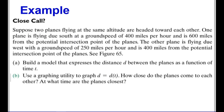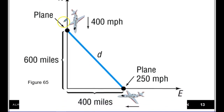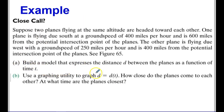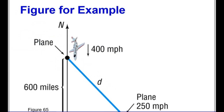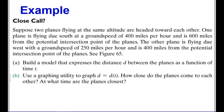Here's our last example. Suppose two planes flying at the same altitude are headed towards each other. One plane is flying due south at 400 miles per hour and is 600 miles from the potential intersection point. The other is flying due west at 250 miles per hour and is 400 miles from the intersection point. We always start with a picture. We have to build a model expressing the distance between the planes as a function of time, then graph it and find how close they come to each other.